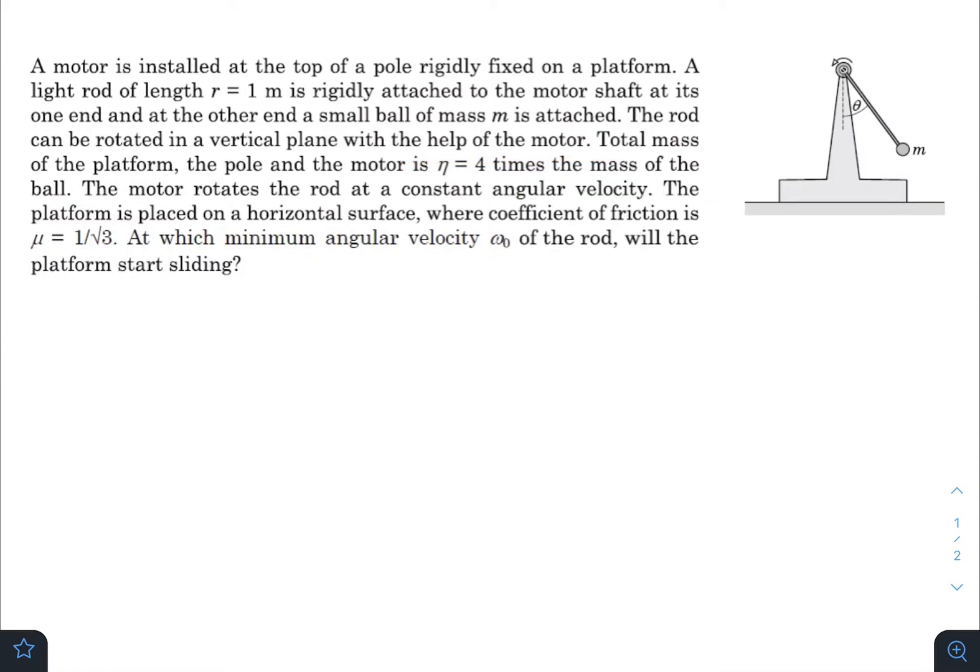Total mass of the platform and the motor is η times the mass of the ball, so mass of motor plus platform is ηm. The motor rotates the rod at a constant angular velocity. The platform is placed on a horizontal surface where coefficient of friction is μ. At what minimum angular velocity ω₀ of the rod will the platform start sliding?